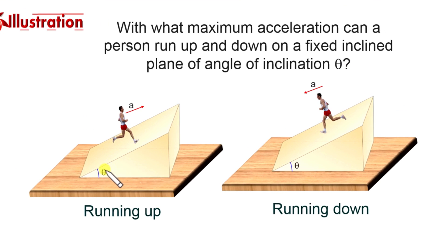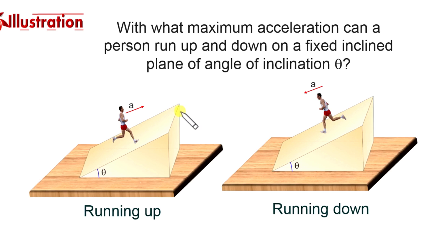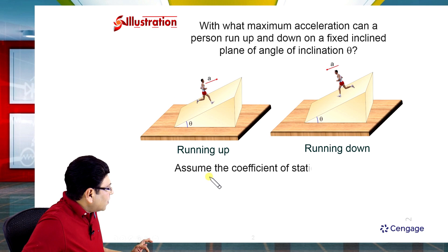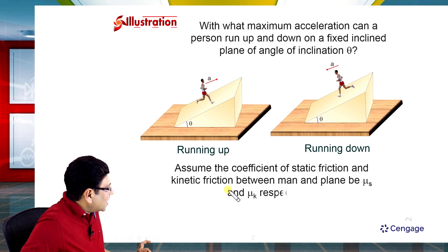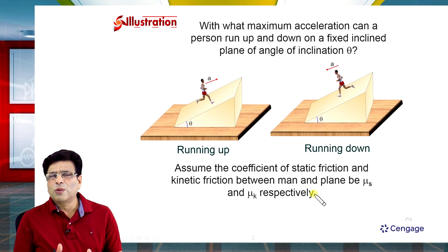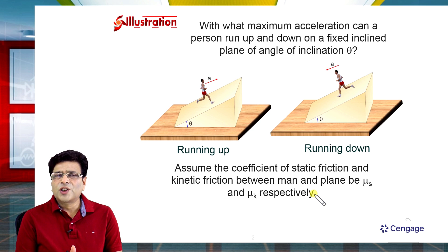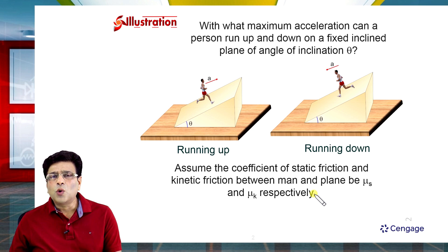You can observe two cases here. In the first case, the man is running in the upward direction of the incline, and in the second case, the man is running down the incline. We are given the coefficient of static friction and kinetic friction between the man and the plane as μs and μk respectively.